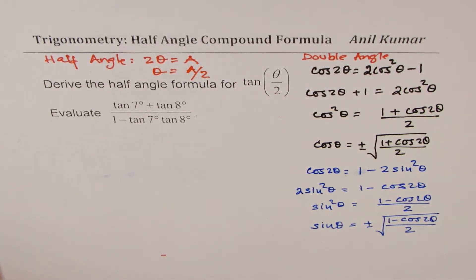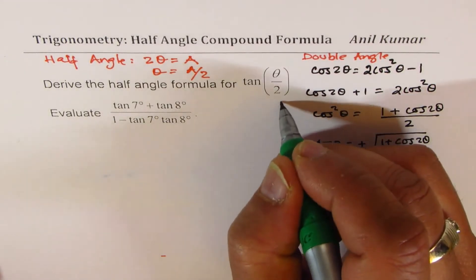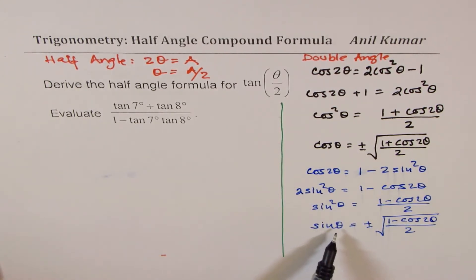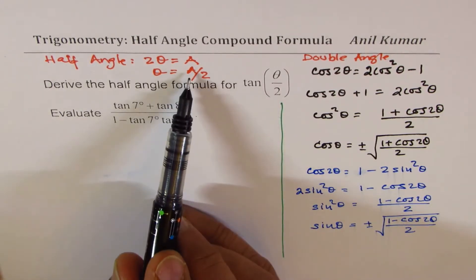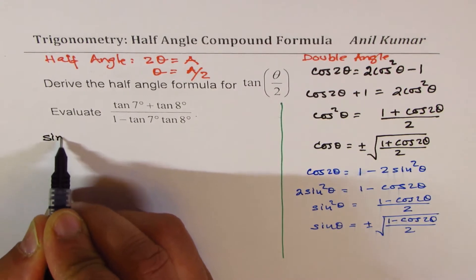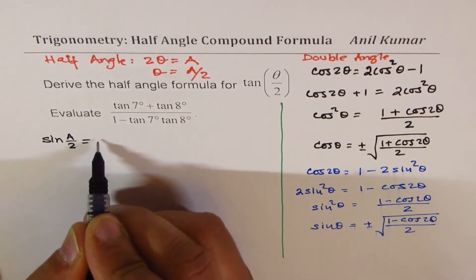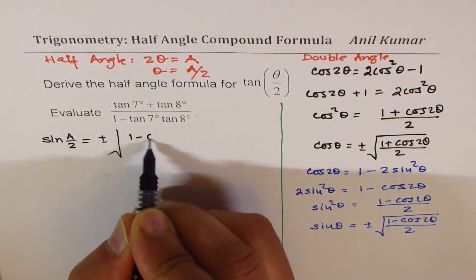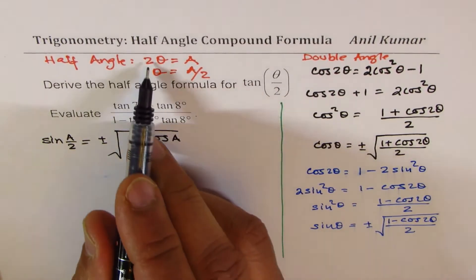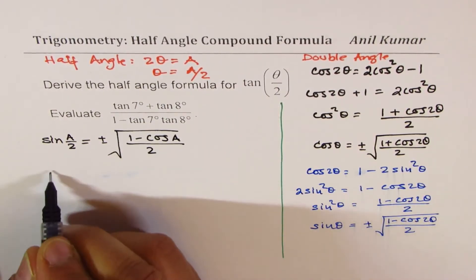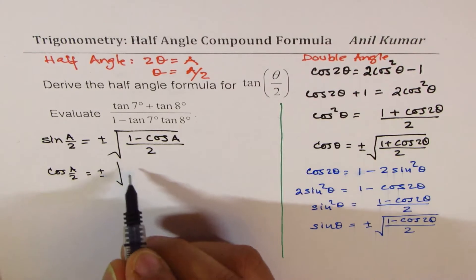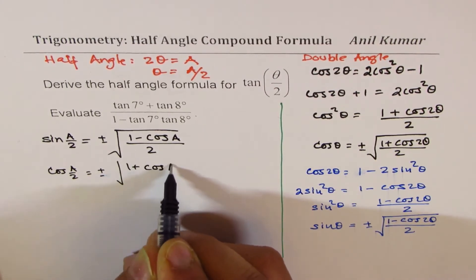Double-angle and half-angle are very much related. The only thing is, we have sin θ here, so instead of θ I'll replace it with a/2. So I could write sin(a/2) as equal to plus or minus the square root of (1 minus cos a)/2 — replacing 2θ by a, simple as that. Similarly, I could write cos(a/2) as plus or minus the square root of (1 + cos a)/2.